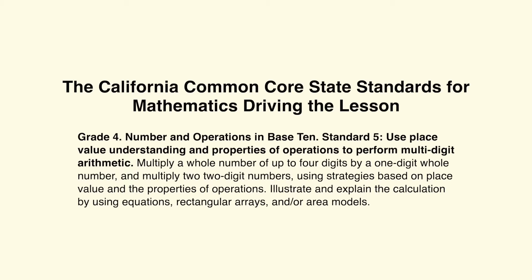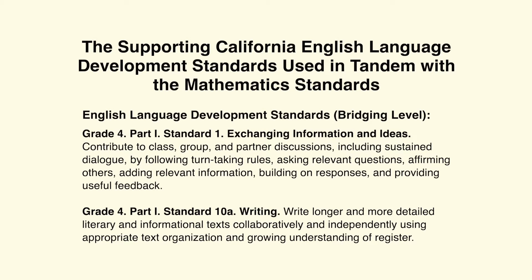Watch for how these California standards are addressed throughout the lesson. The supporting California English Language Development Standards used in tandem with the mathematics standards are at the bridging level: Grade 4, Part 1, Standard 1 — Exchanging Information and Ideas, where students contribute to class, group, and partner discussions including sustained dialogue by following turn-taking rules, asking relevant questions, affirming others, adding relevant information, building on responses, and providing useful feedback. And Grade 4, Part 1, Standard 10a — Writing, where students write longer and more detailed literary and informational texts collaboratively and independently using appropriate text organization and growing understanding of register. Watch how students move from early levels of proficiency toward the bridging levels of these ELD standards throughout the lesson.